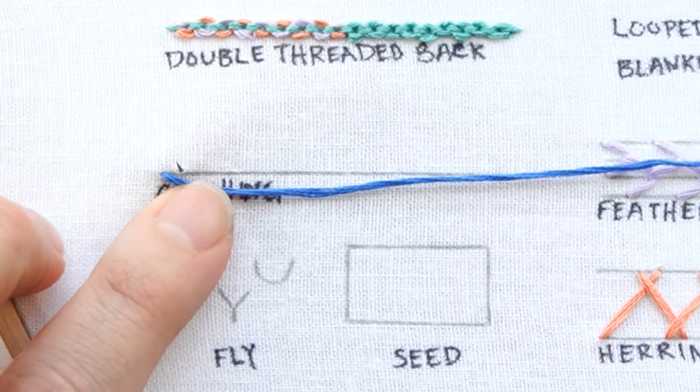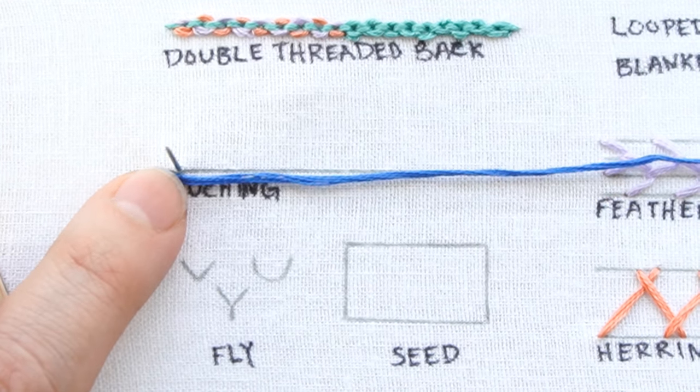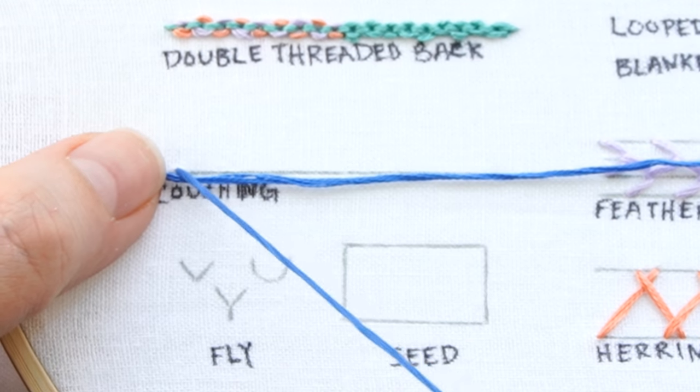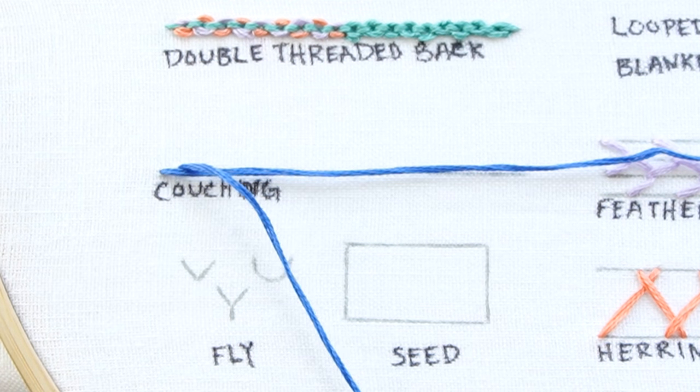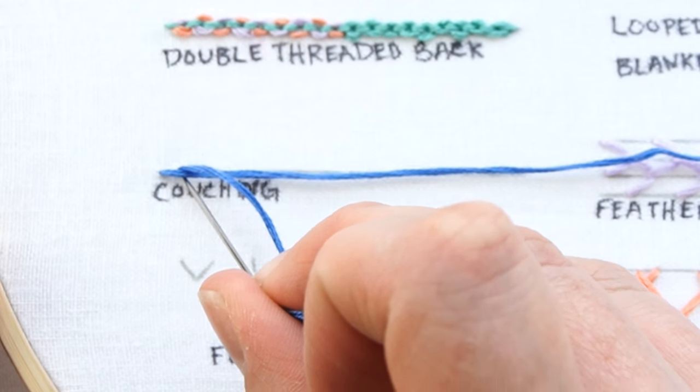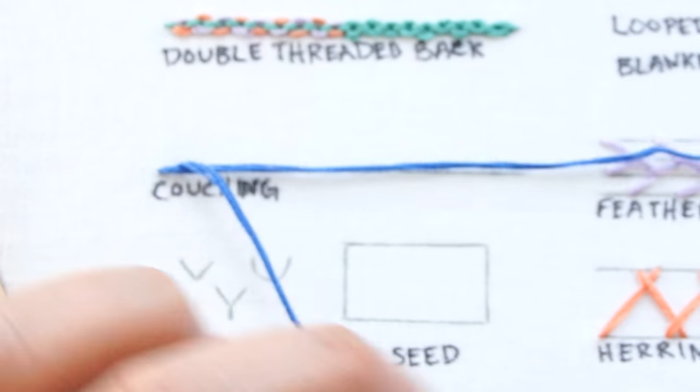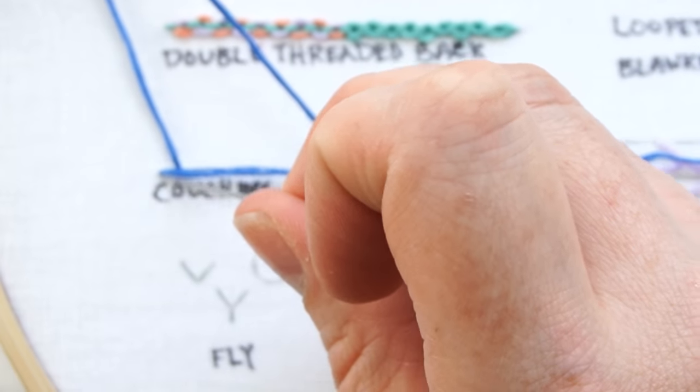I'm going to bring it up ever so slightly to the top of my line, about a stitch length forward, and then just make a tiny stitch over your thread to the other side of your line.